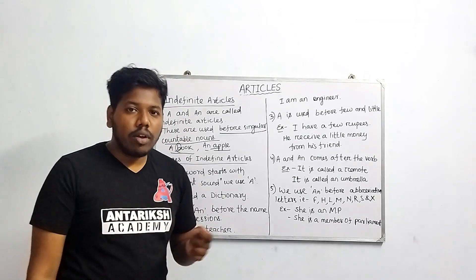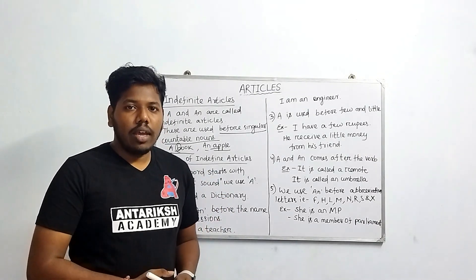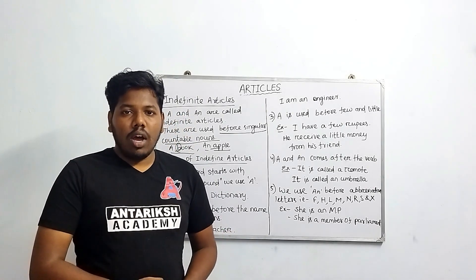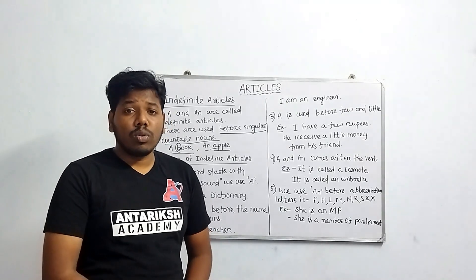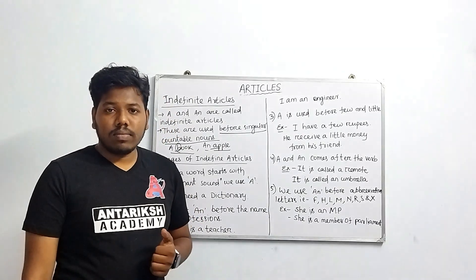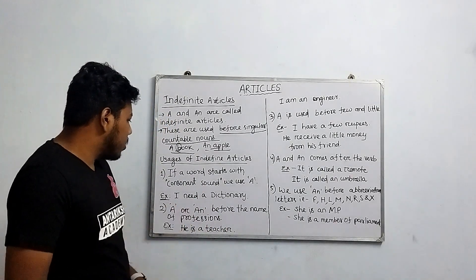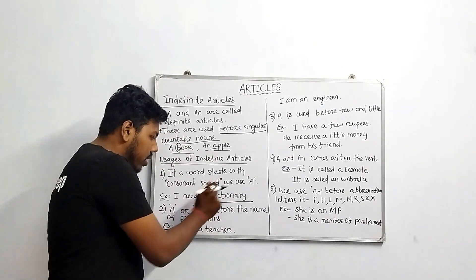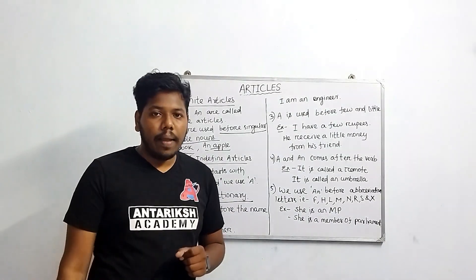Now, what are the uses of indefinite articles — in which sentences do we use them? The first use is: if a word starts with a consonant sound, we use 'a'. For example, 'a dictionary' — here, 'd' is a consonant, so we use 'a' before it.